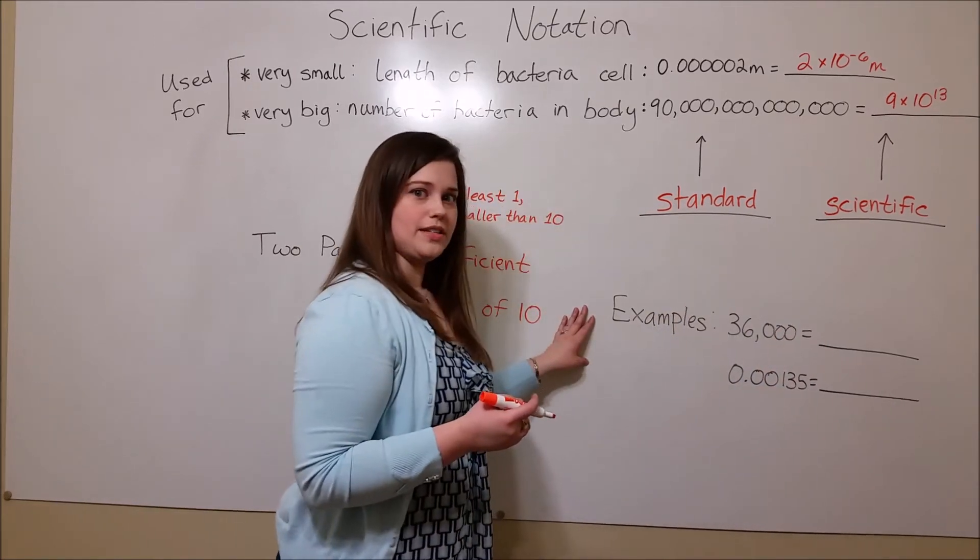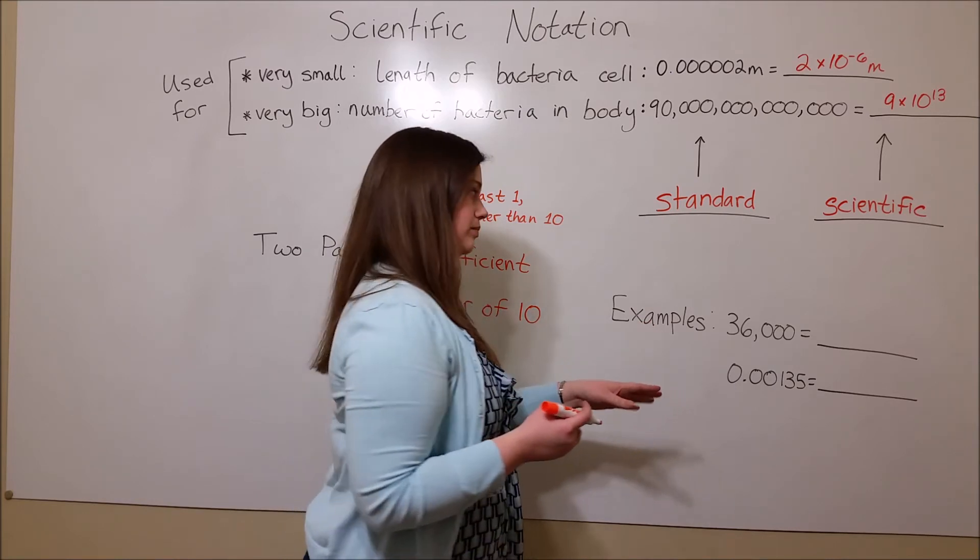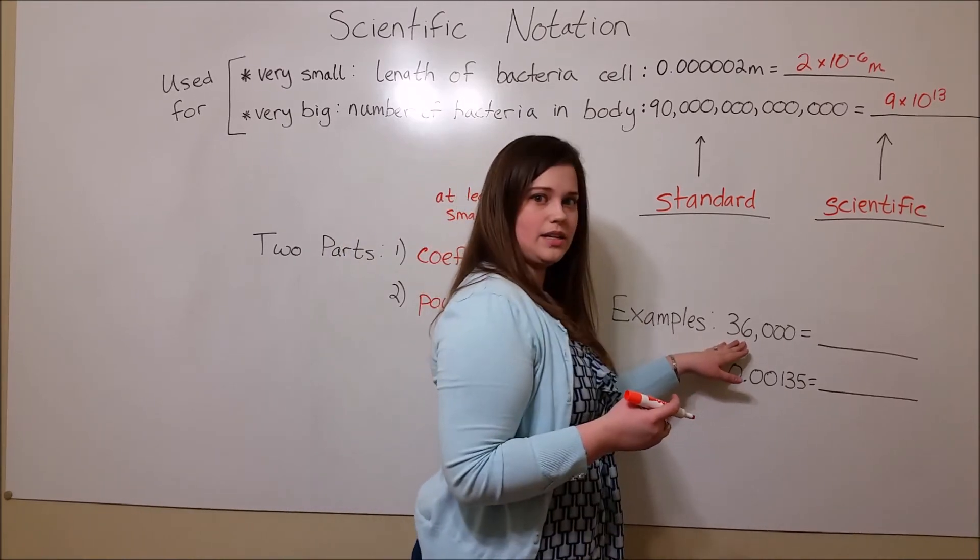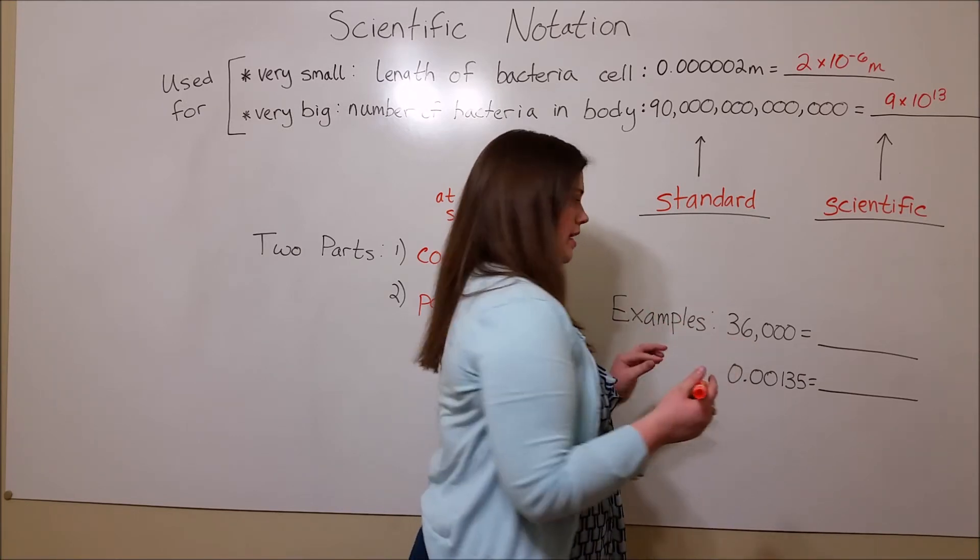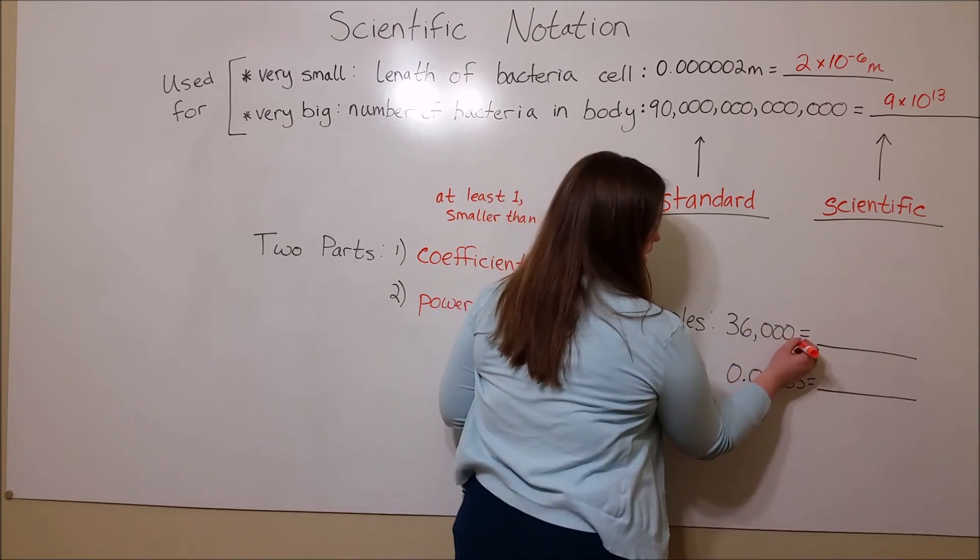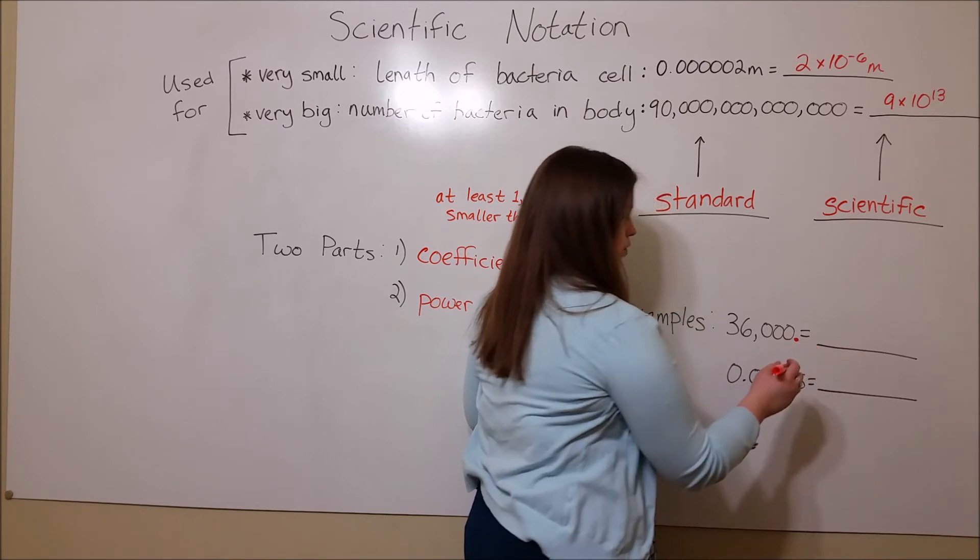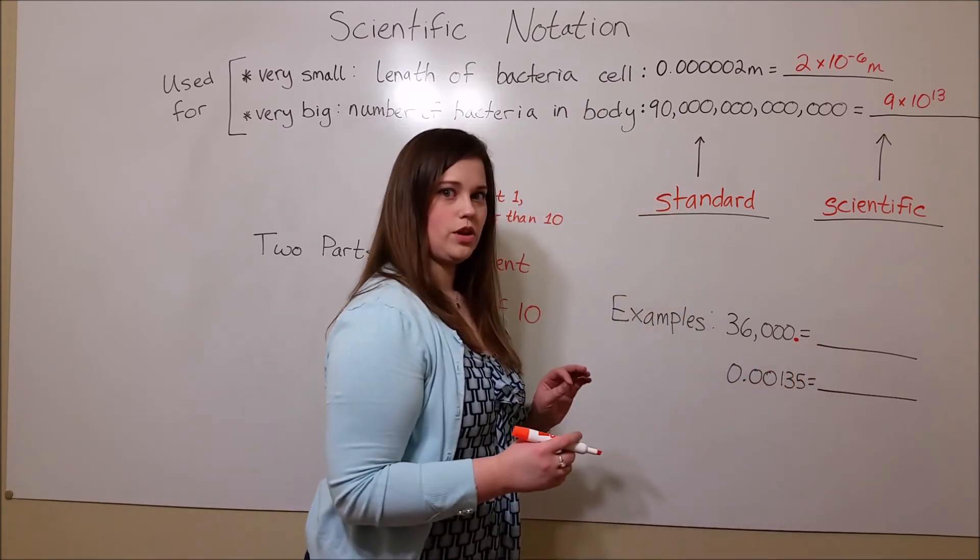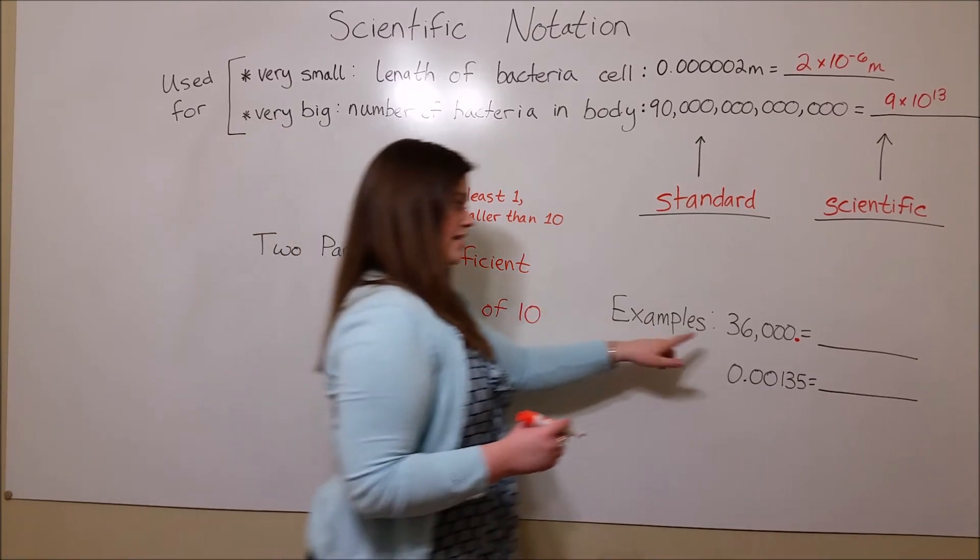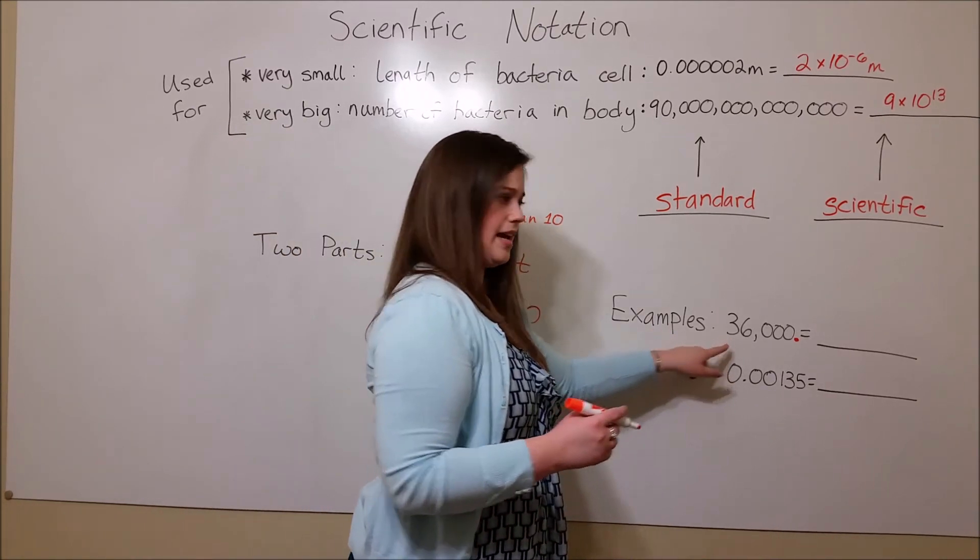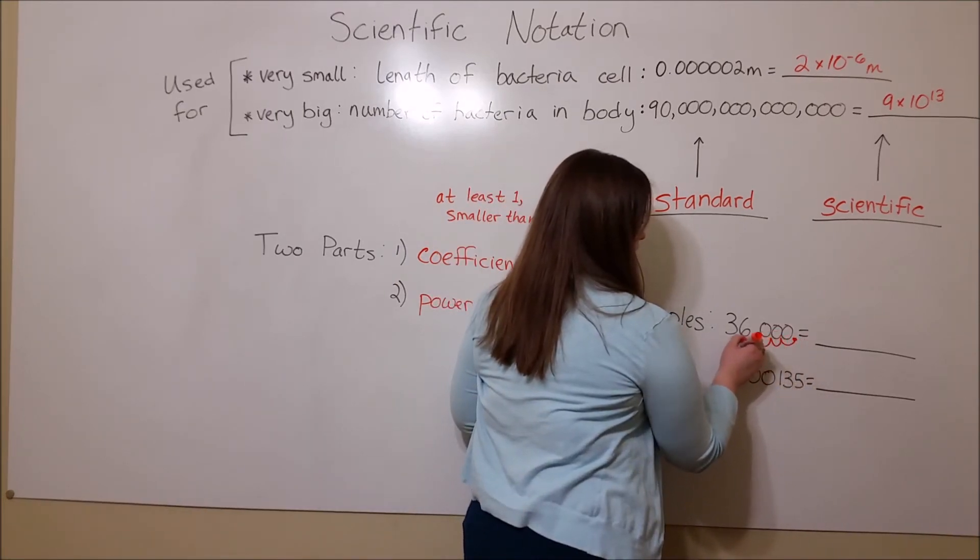Now let's do a couple of examples in taking standard notation and converting them to scientific notation. For example, with 36,000, the key is following the decimal points. In 36,000, there is an understood decimal right here. And it's going to move until it gets to a place where the coefficient is at least one, but smaller than 10. In this case, 3.6. So the decimal will move 1, 2, 3, 4.